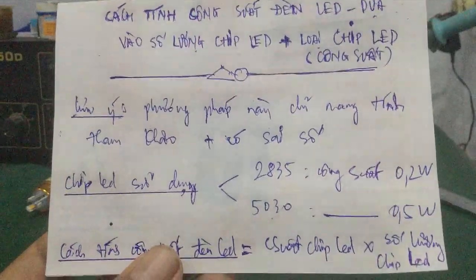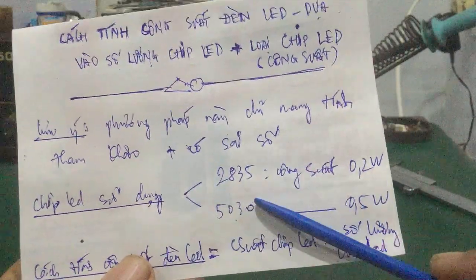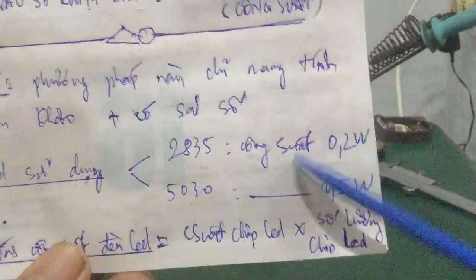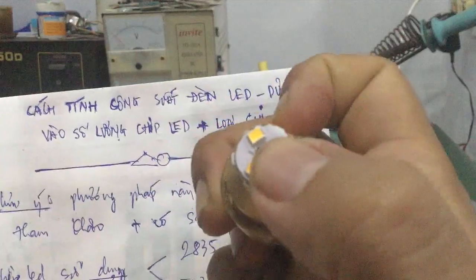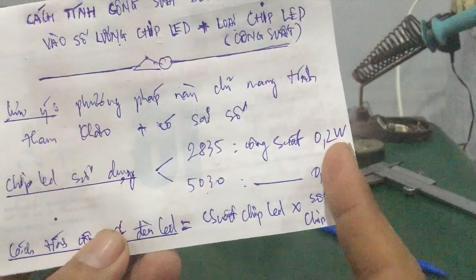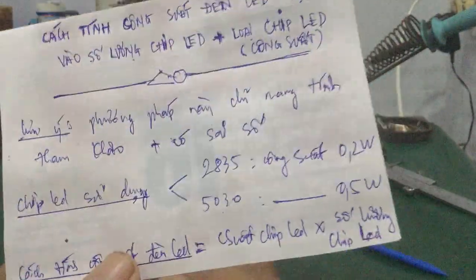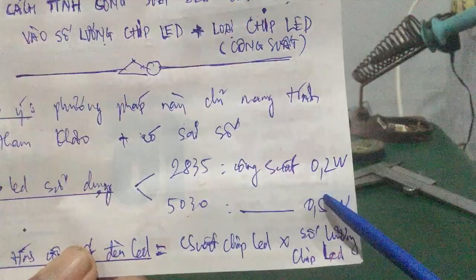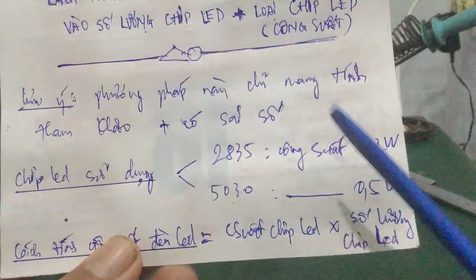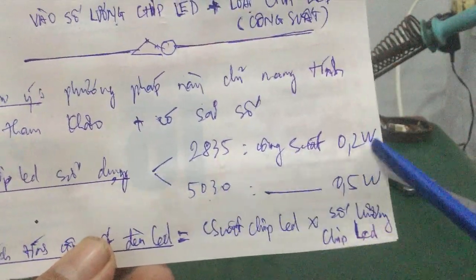Đây là chip LED 2835 nha các bạn. Đối với hai chip LED này: cái chip LED 2835 có công suất hay sử dụng phổ biến nhất là 0,2W — đó là công suất của một con. Còn cái con chip LED 5030 có nhiều loại: thông thường nó có loại 0,2W, 0,25W, 0,5W, rồi 1W. Nhưng mà ở đây mình sẽ xét vào hai loại công suất phổ biến của nó là 0,5W và 1W.